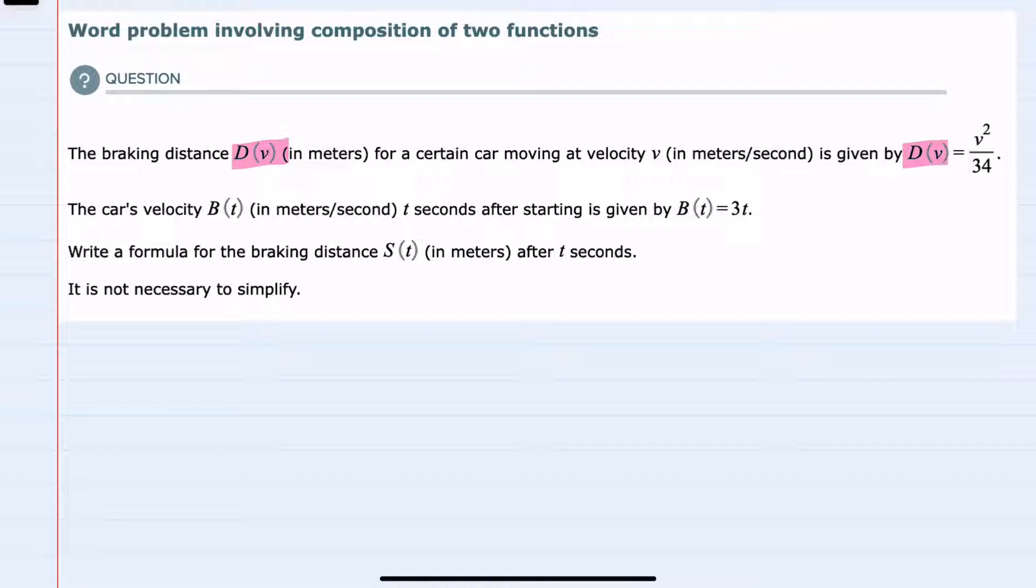And then we're also told that velocity as a function of time here, b of t is 3 times t. And we're asked to find s of t,